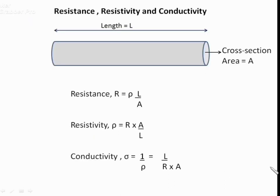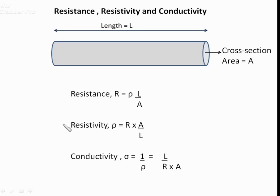Now we will quickly go through resistance, resistivity, and conductivity. Resistance is equal to ρL/A, where L is length of conductor and A is cross-sectional area. Resistivity ρ equals R×A/L. Conductivity, which is the reciprocal of resistivity, equals L/(R×A). Resistivity should be kept lower, that is, conductivity should be kept higher.